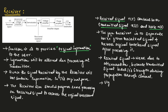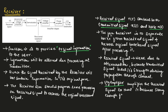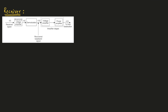The voltage amplifier amplifies the received signal so that it becomes strong enough for further processing. Since the received signal is weak, the voltage amplifier amplifies it so that it becomes strong enough for further processing. The next stage is demodulation.